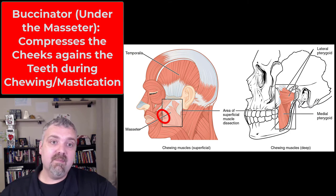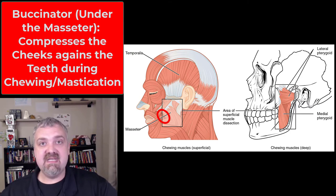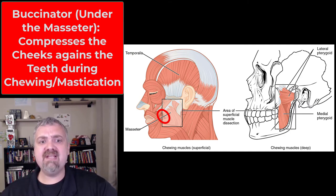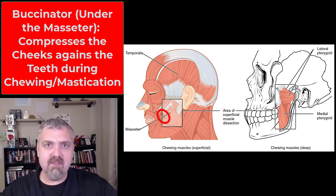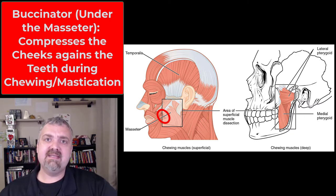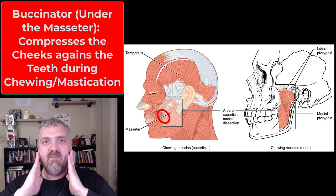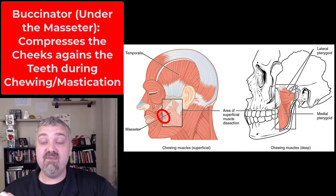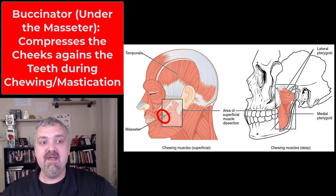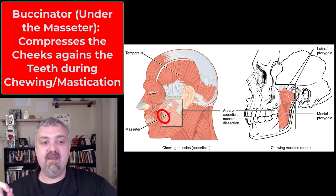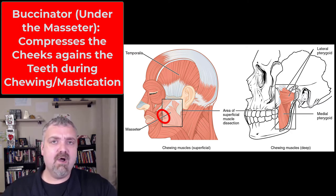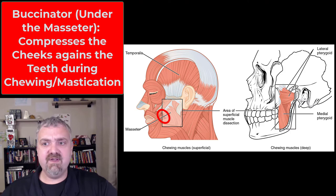Then we have the buccinator — which basically means trumpeter. Its job is to compress the cheek, so if you were blowing into a horn instrument or blowing up a balloon. Its role in mastication is that it compresses the cheeks against the teeth when you're chewing, so it makes your teeth way more functional. The temporalis, the masseter, and the buccinator muscle are all very superficial muscles you can see.